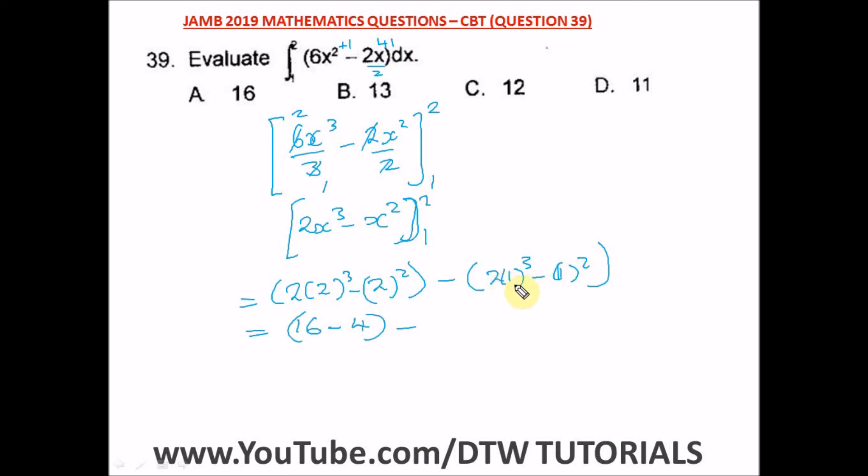This is 2 times 1. 1 raised to power 3 is still 1, and 1 times 2 is 2. So we have 2 minus 1 raised to power 2, which is still 1.